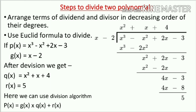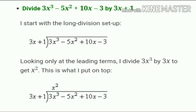For example: p(x) = x³ - x² + 2x - 3 and g(x) = x - 2. When we divide, we find q(x) = x² + x + 4 and r(x) = 5. We then verify using the division algorithm: p(x) = g(x) × q(x) + r(x).